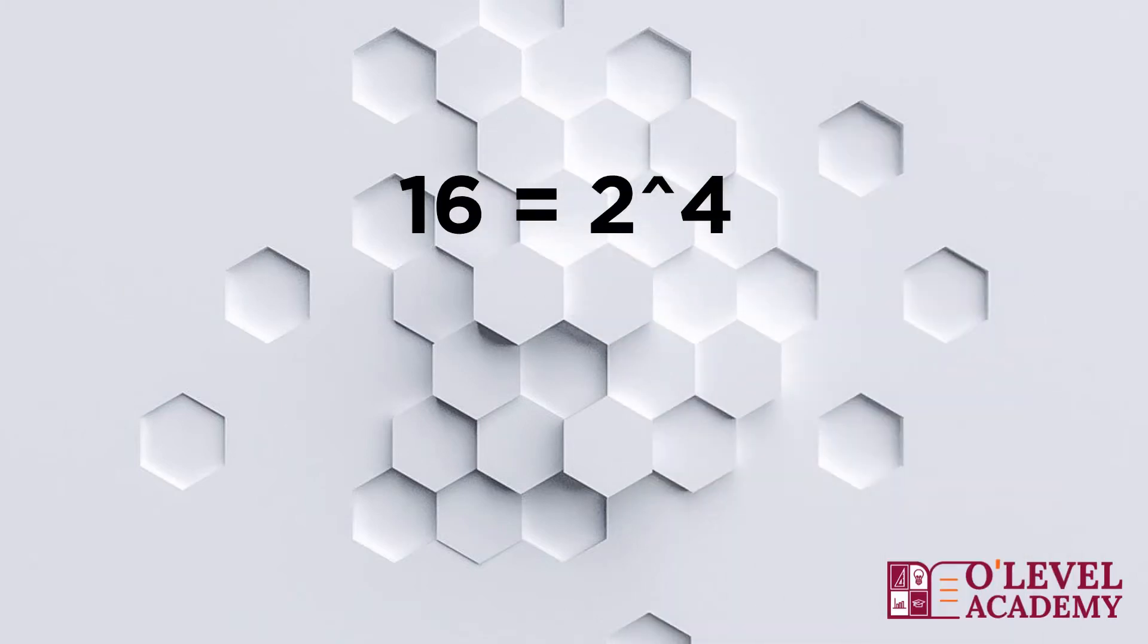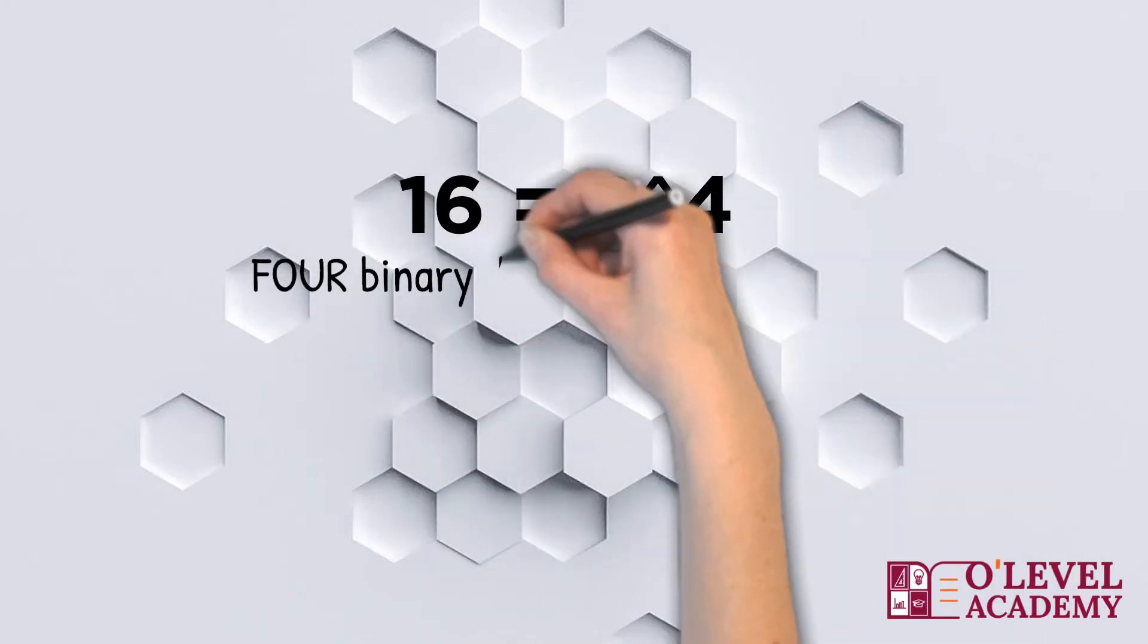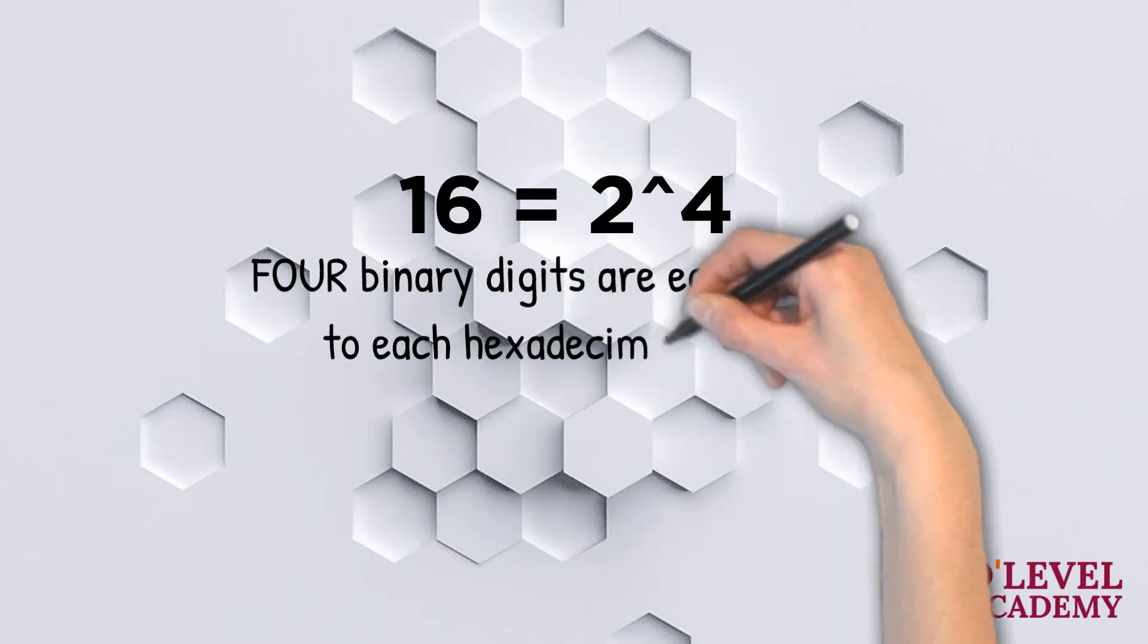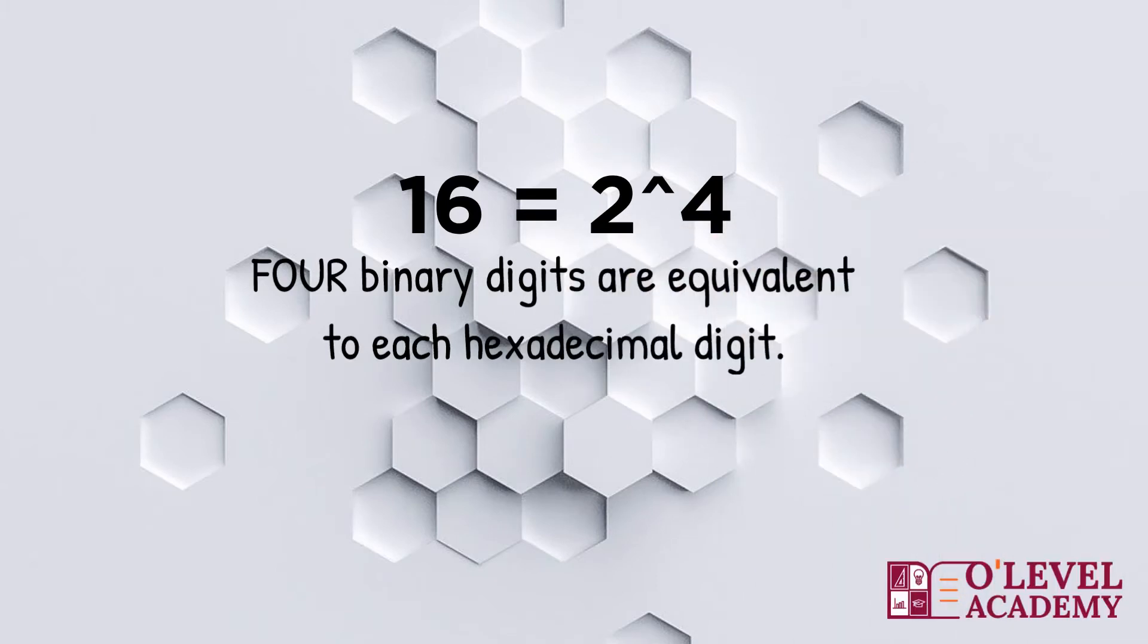Since 16 equals 2 raised to the power 4, meaning that a hex number can be represented in binary using 4 bits.